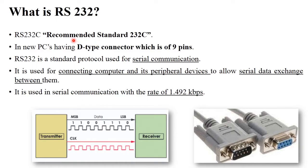RS stands for Recommended Standard. Nowadays in PCs, a D-type connector is used. You are likely familiar with this connector — you can connect different peripheral devices to your computer using this D-type connector cable, such as a projector, modem, or printer. For data communication between these devices and your system, RS-232 protocols are used. This protocol is generally used for serial communication. As seen in the image, the transmitter sends data bit by bit to the receiver, and RS-232's data transfer rate is 1.492 kbps.